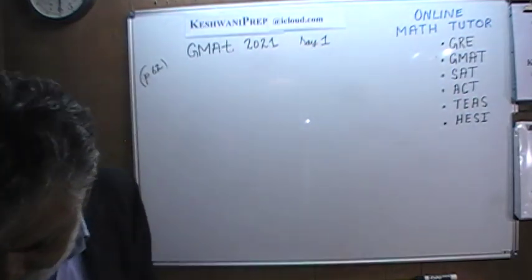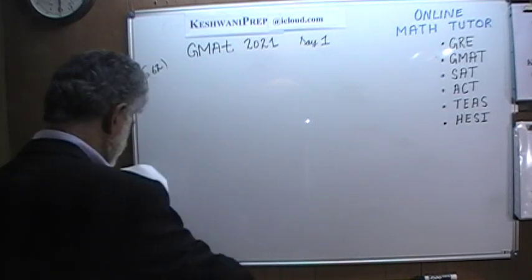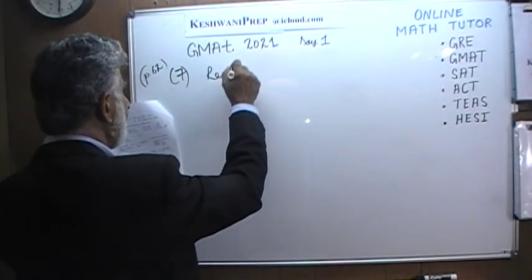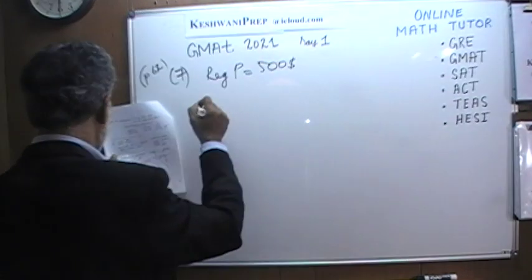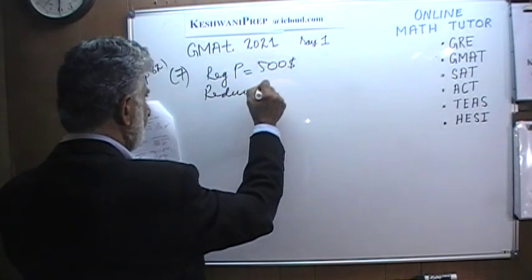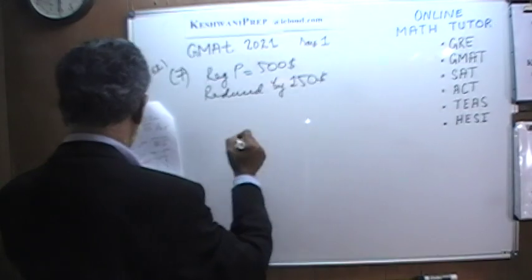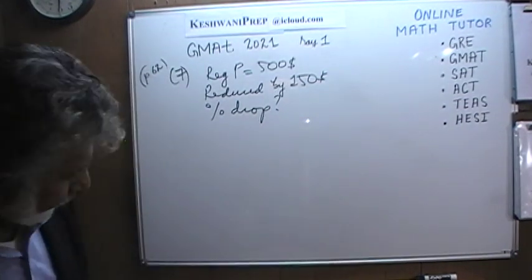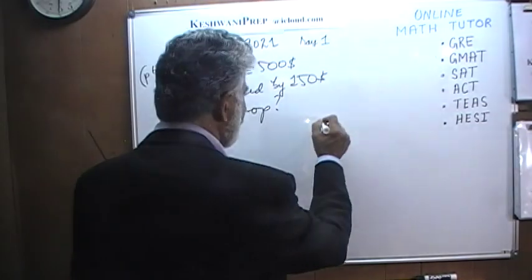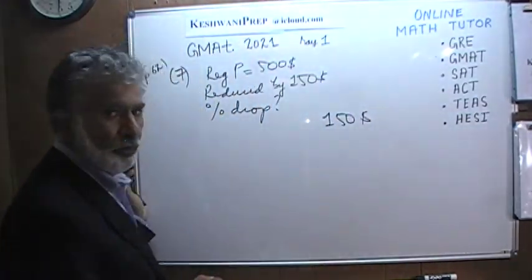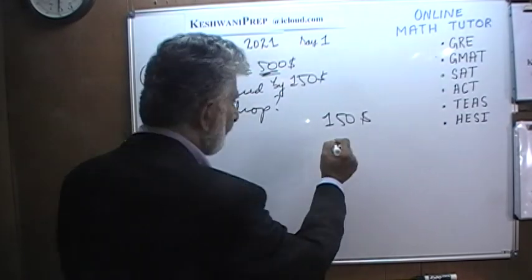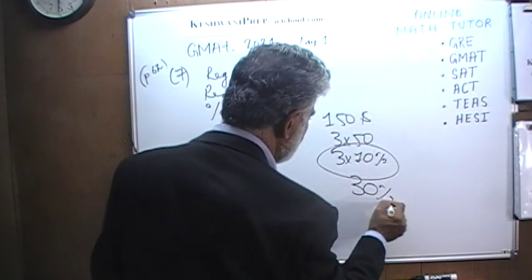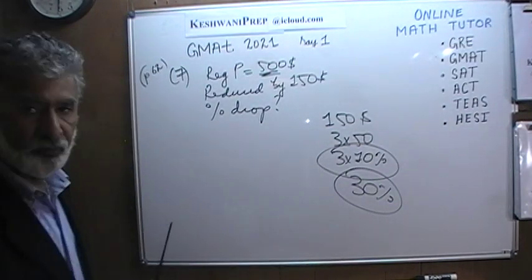Number seven: the regular price is $500 and it is reduced by $150. The question is: what is the percentage drop? Very straightforward — 10% of 500 is $50, and $150 is just three times $50, so the price is reduced by 30%.